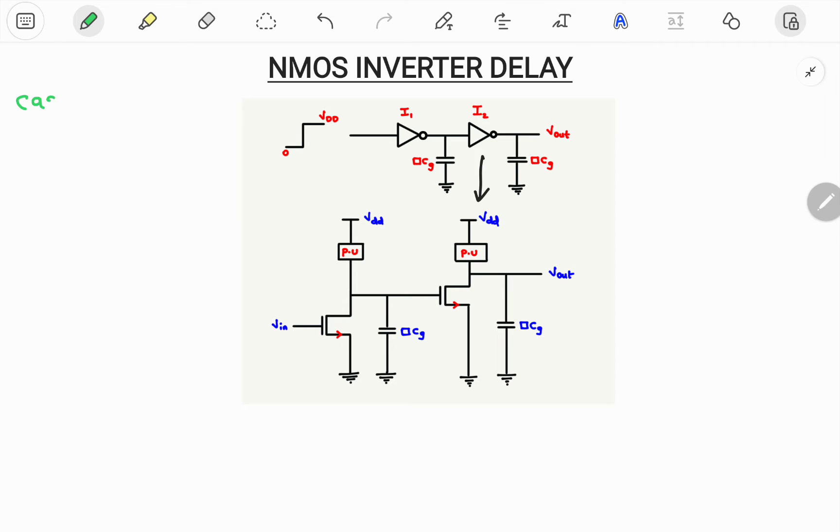Now let me take case number 2. So in case number 2 I will apply Vin equals 0. If I apply Vin equals 0 here, this one will be in off state. Off means it is open circuit. So there exists a path for this particular CG to get charged. So here we get charging time constant.